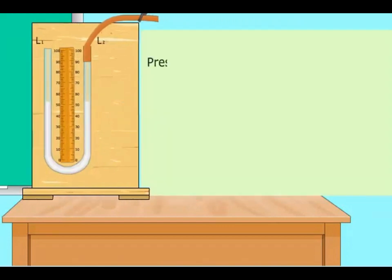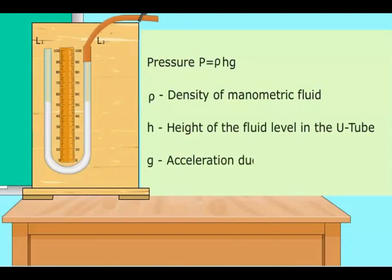The formula for calculating the pressure of air trapped inside the tube is given by P equals ρgh. On substituting the corresponding values in the above formula, we get the pressure value.